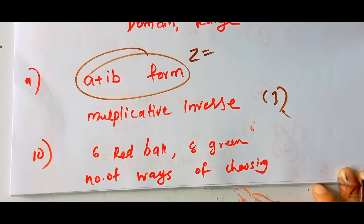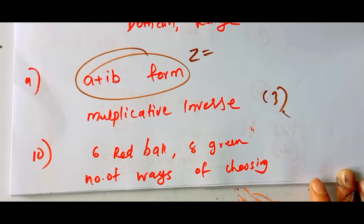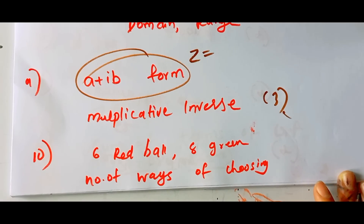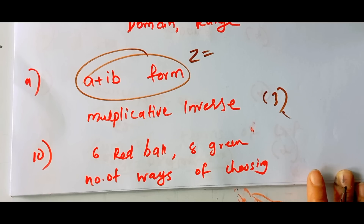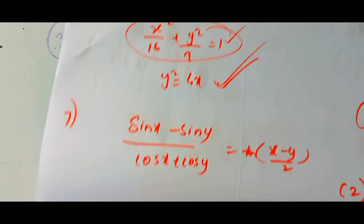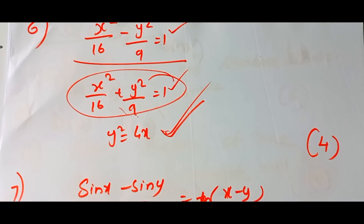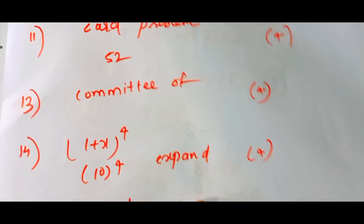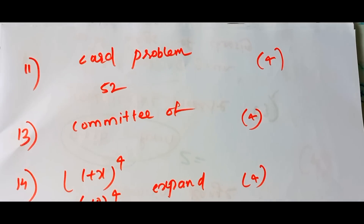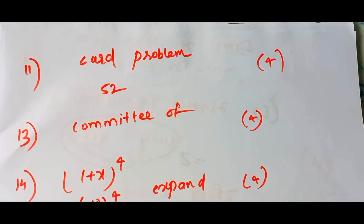Then, permutations and combinations. We have 6 red balls and 8 green balls. If you have 3 red balls, the number of ways of choosing 3 red balls — we can see the ball problems as well. We can see card problems: they have 52 playing cards, a red card, one diamond.